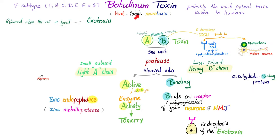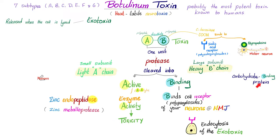Botulinum neurotoxin is heat-labile and has seven subtypes: A through G. It's probably the most potent toxin ever. The A subunit is active with zinc endopeptidase activity — a protease that breaks down proteins and peptides. The B subunit will not kill you directly; instead it binds to your cell receptor and facilitates entry of the A subunit into your neuron. B is a carbohydrate-binding protein that binds your cell receptors.